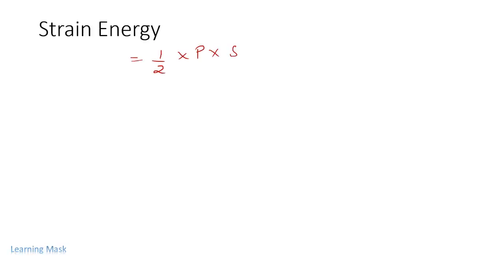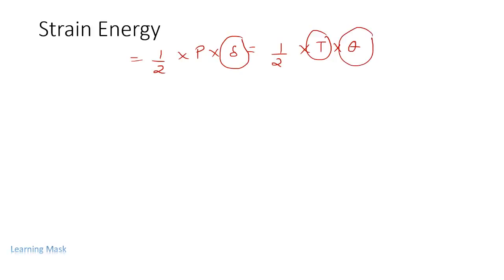Strain energy is the ability of a material to absorb energy when it is strained. The mathematical expression is: U = (1/2) × P × δ + (1/2) × T × θ, where P is the applied load, δ is the elongation, T is the applied torque, and θ is the twist produced by the torque.